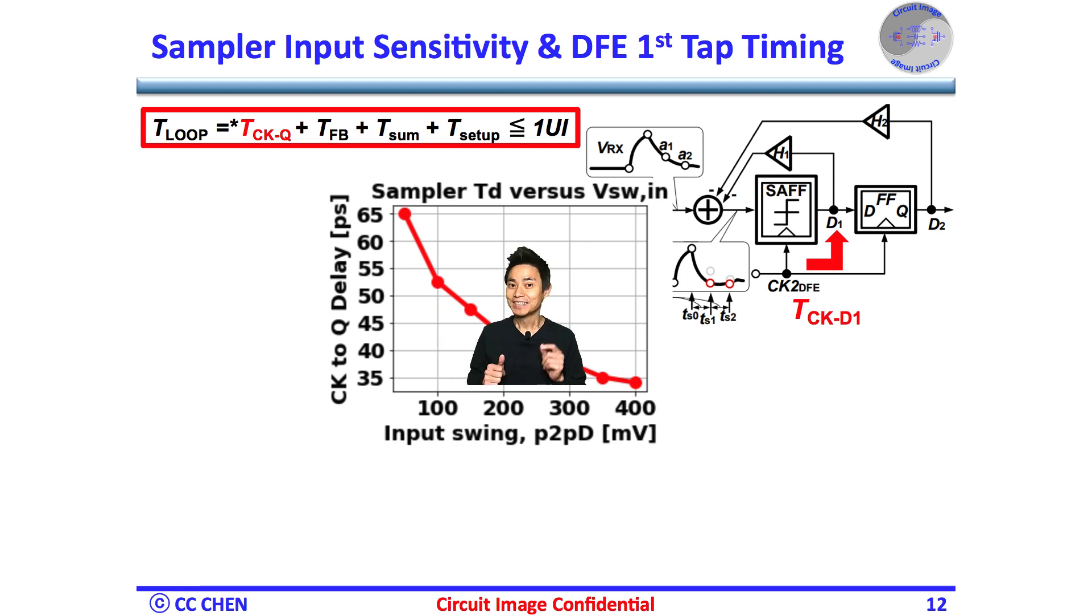On the other hand, if the target data rate is 8 gigabit per second, then the clock-to-Q delay can have an extra 25 picosecond longer margin, which makes the required input swing 60 mV less than it should be.